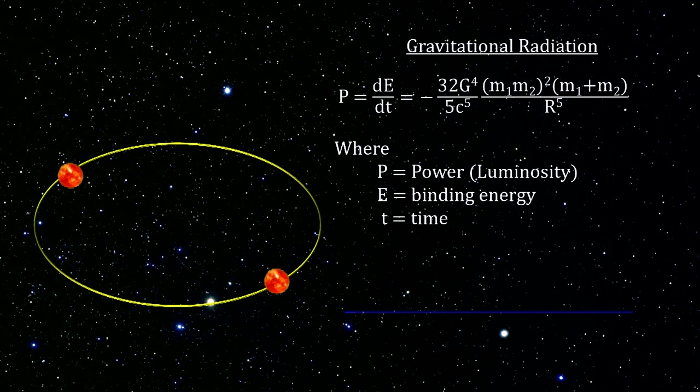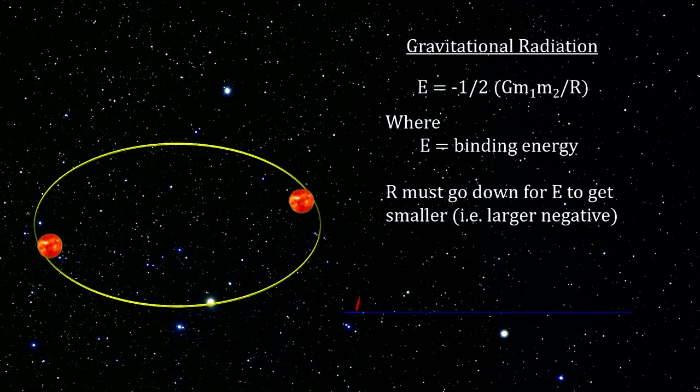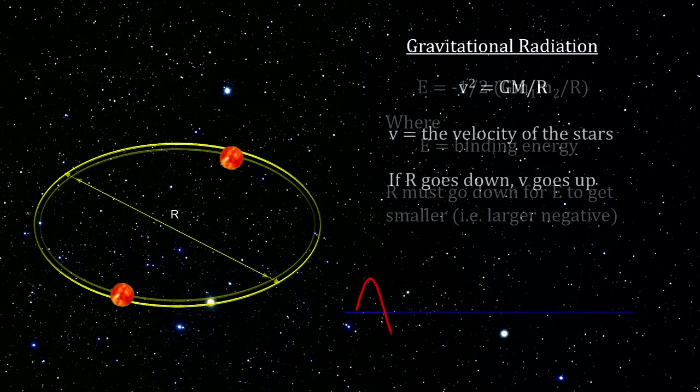Newton and Kepler provided the mechanics for understanding what happens to the orbit when gravitational energy is lost. Because binding energy is negative, a loss of energy will make it a larger negative. This has the effect of reducing the distance between the two objects.